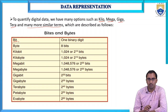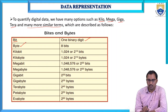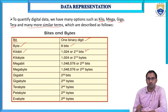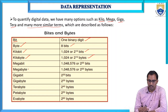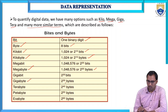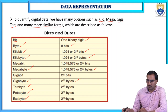A bit is a single binary digit. A byte is a group of eight bits. A kilobit is 1024 bits or 2^10 bits. A kilobyte is 1024 bytes or 2^10 bytes. A megabyte is 2^20 bytes. A gigabyte is 2^30 bytes. A terabyte is 2^40 bytes. A petabyte is 2^50 bytes. An exabyte is 2^60 bytes. In this way we can represent the quantity of digital data.